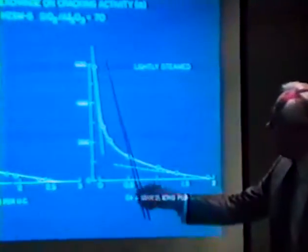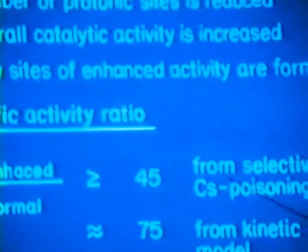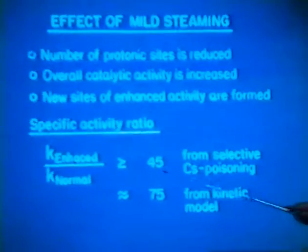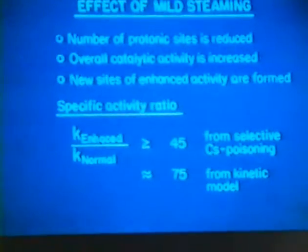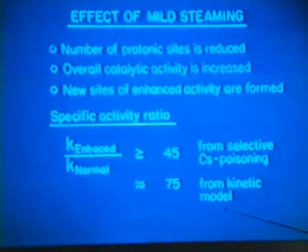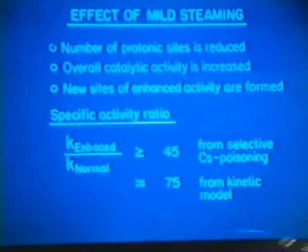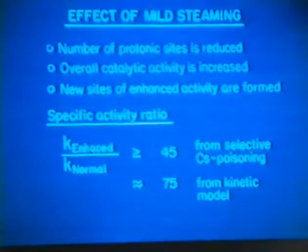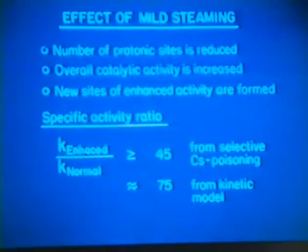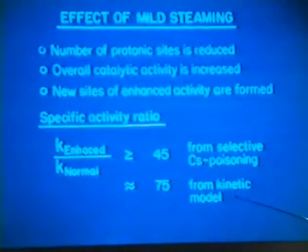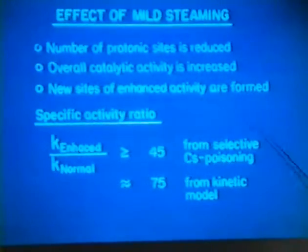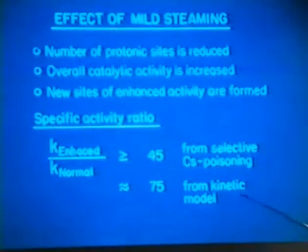But if we do this, we can get some kind of an approximation which is not as precise as the other, but the number of sites, activity per site here. And I think I've prepared this here. With selective cesium poisoning, we get a value that's about 45, and a kinetic model by the activation energy difference of 75. So we indeed have reasonably good evidence for that.